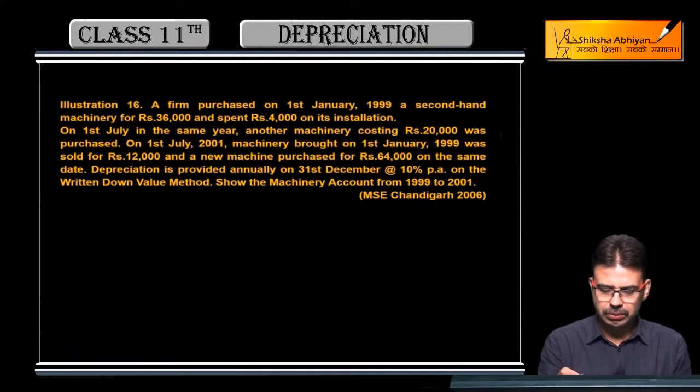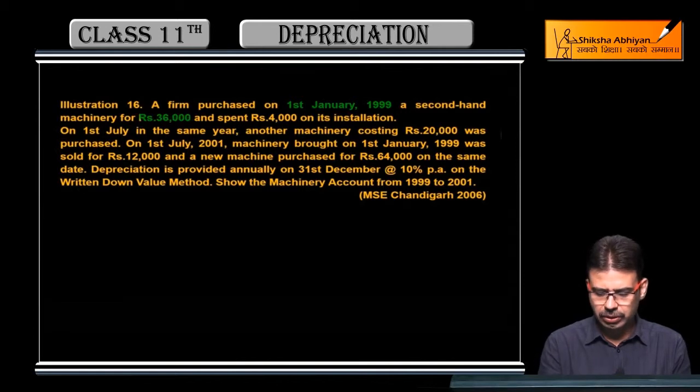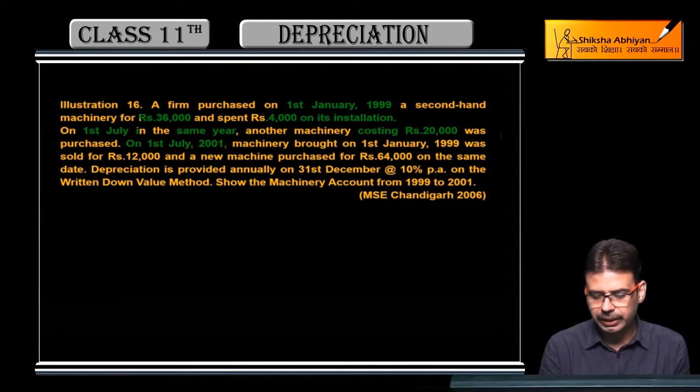Next question: A firm purchased on 4th January 1999 machinery for 36,000 rupees and 4,000 on its installation, that means 40,000 total in our machinery. 1st July in the same year we bought another machinery for 20,000 rupees.